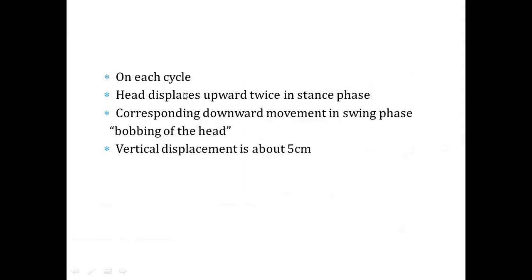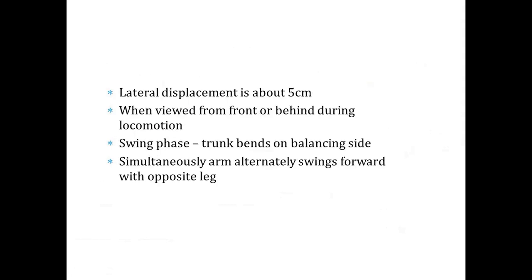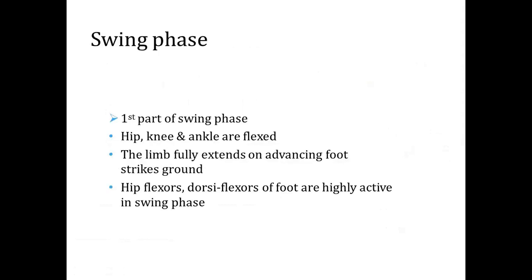On each cycle, the head displaces upward twice in the stance phase, with corresponding downward movement in the swing phase — called bobbing of the head — with a vertical displacement of about 5 cm. Lateral displacement is also about 5 cm when viewed from front or behind. In swing phase, the trunk bends on the balancing side, and the arm alternatively swings forward with the opposite leg. In the first part of swing phase, hip, knee, and ankle are flexed; the limb fully extends on advancing and the foot strikes the ground. Hip flexors and dorsiflexors of the foot are highly active in swing phase.